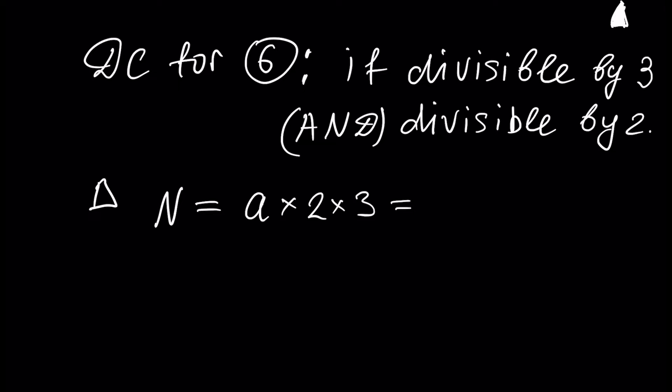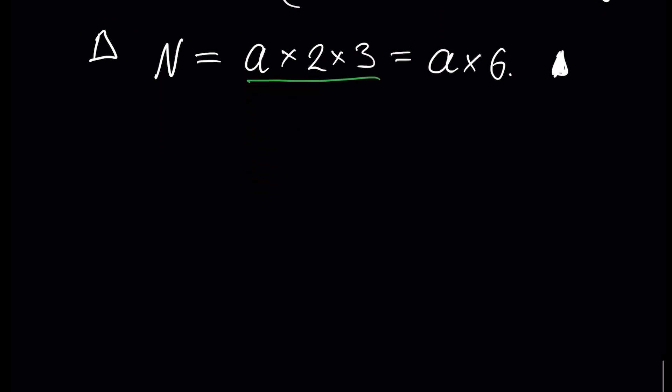In this case, if our number n is divisible by 3 and 2, we have to have such a representation. And if we rewrite our representation, this will be a times 6, and this kind of number is divisible by 6, because it has a factor 6. If we divide our number, we will have just a without 6.